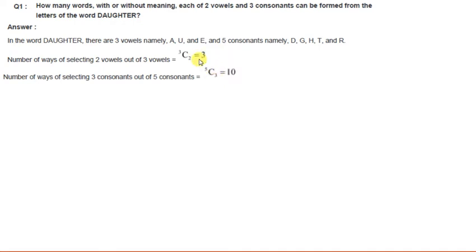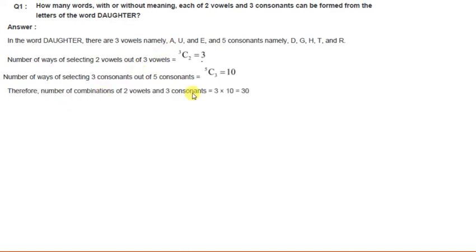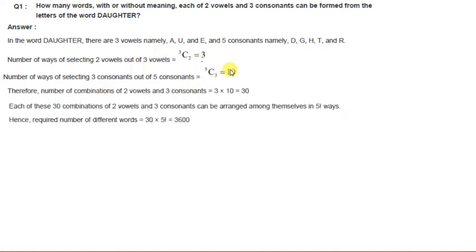Now we have to do both selections together. So by the multiplication principle, this can be done in 3 into 10, that is 30 ways.